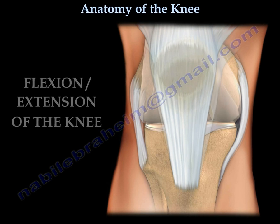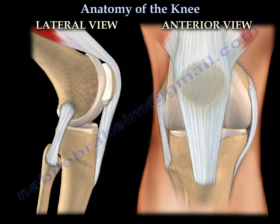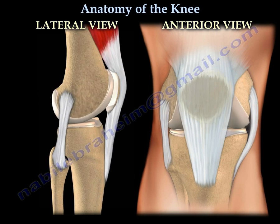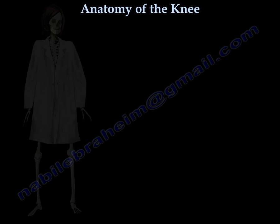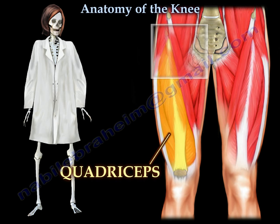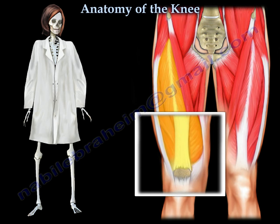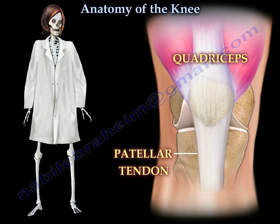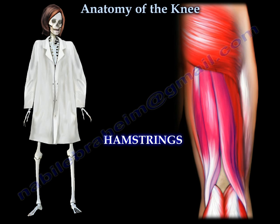The knee is a hinge joint that allows for flexion and extension of the knee. In front of the knee, the quadricep muscle is attached to the patella. The patellar tendon arises from the patella and inserts into the proximal tibia. The hamstring muscles are shown here at the back of the knee.